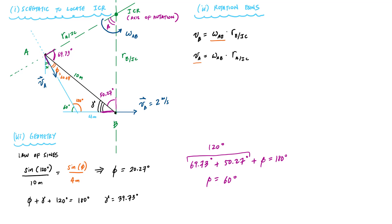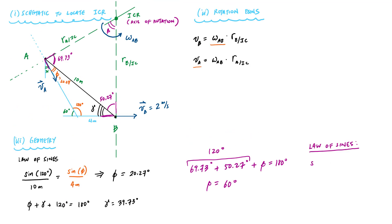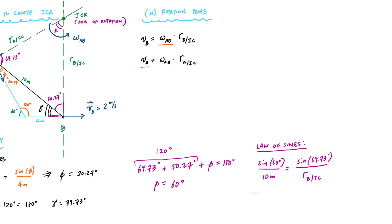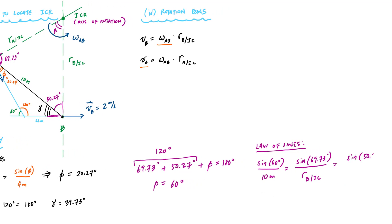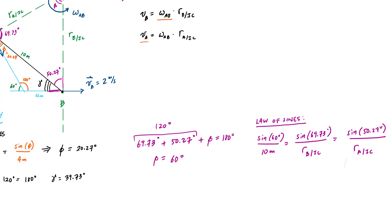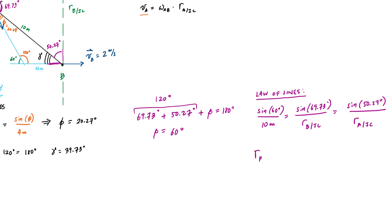And then from the law of sines, I could determine RBIC and RAIC. I would get that sine of 60 over 10 meters is equal to the sine of 69.73 degrees over RBIC. And this is equal to the sine of 50.27 degrees over RAIC. And just from these ratios, I will be able to figure out that RBIC is equal to 10.83 meters. And RAIC is 8.88 meters.